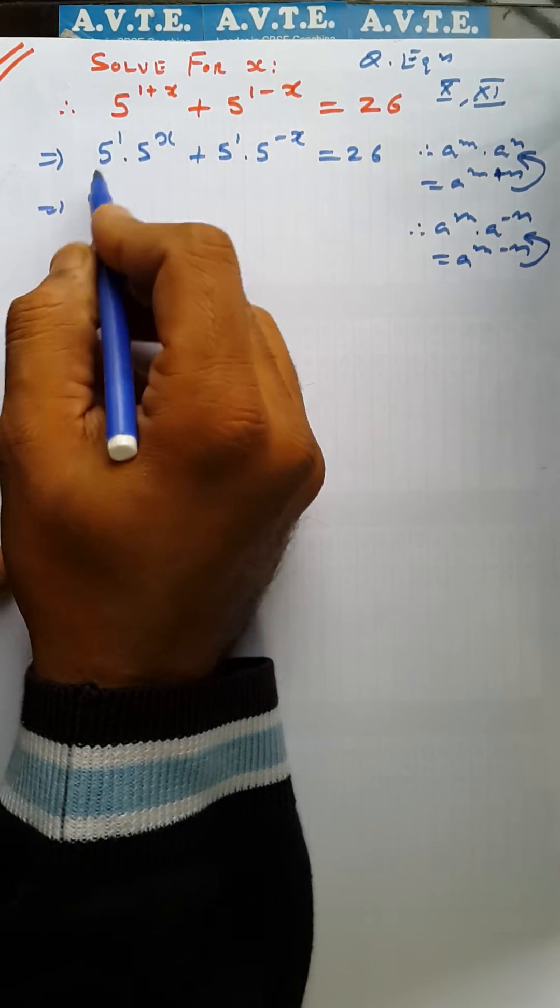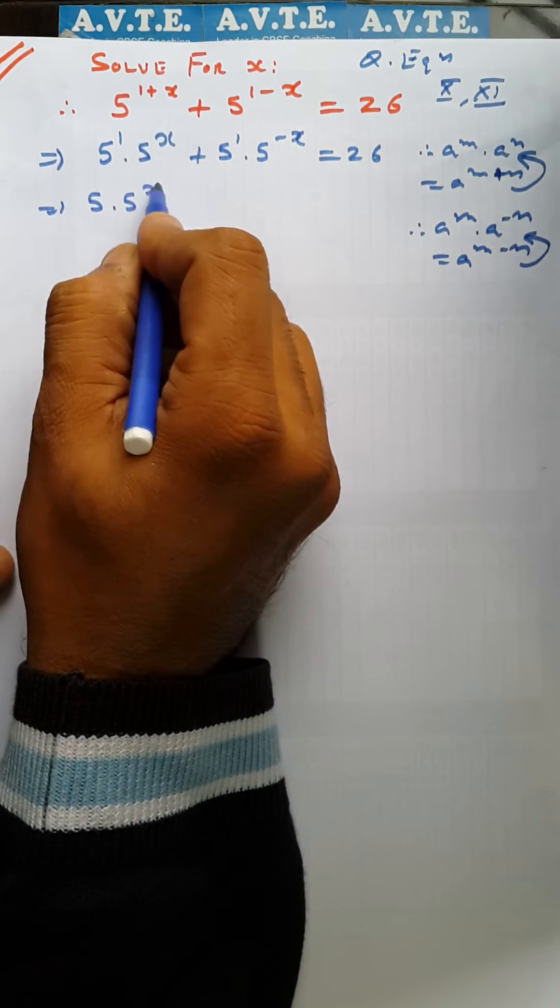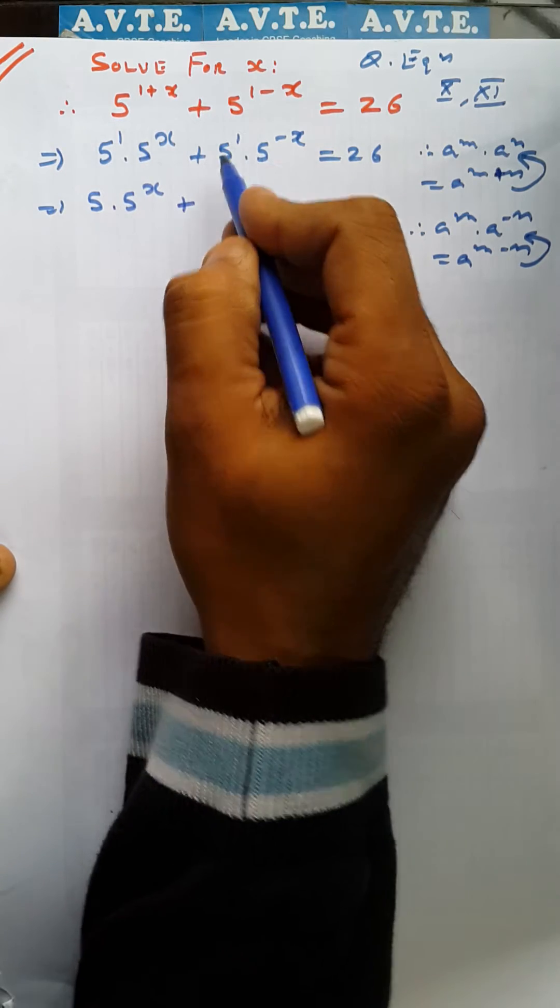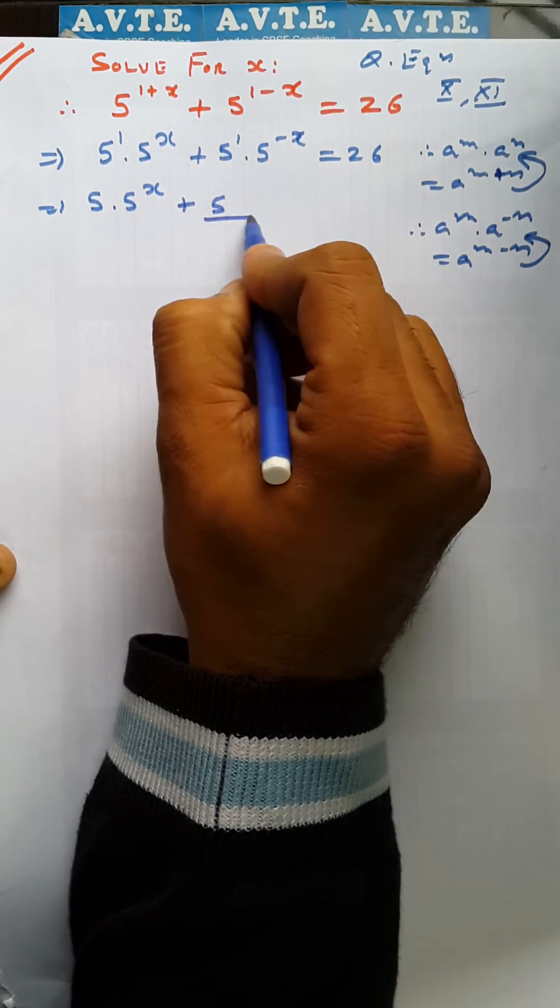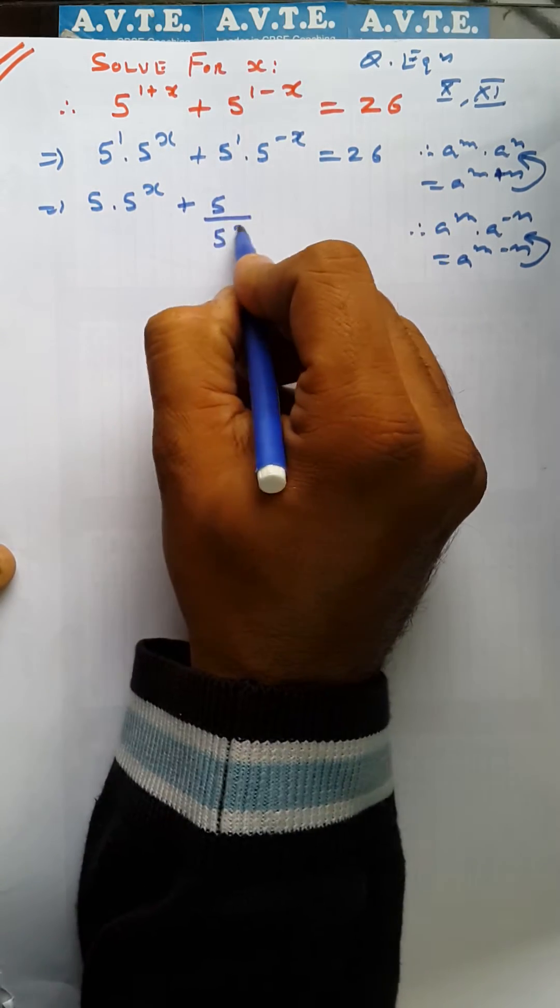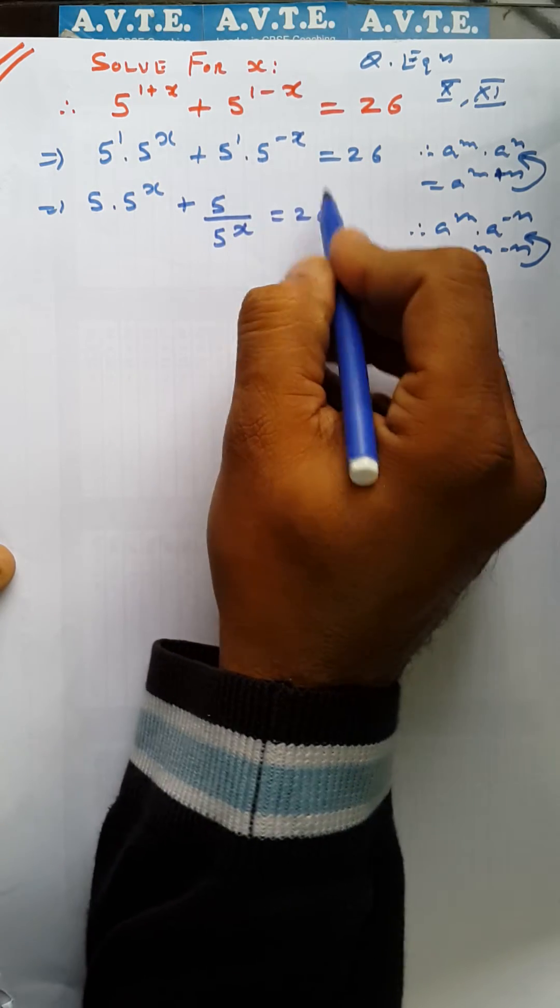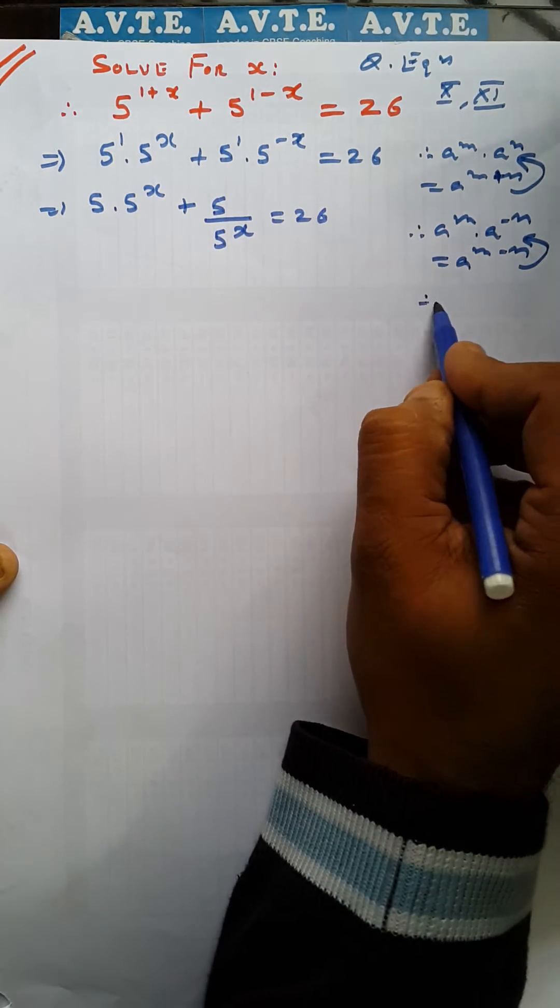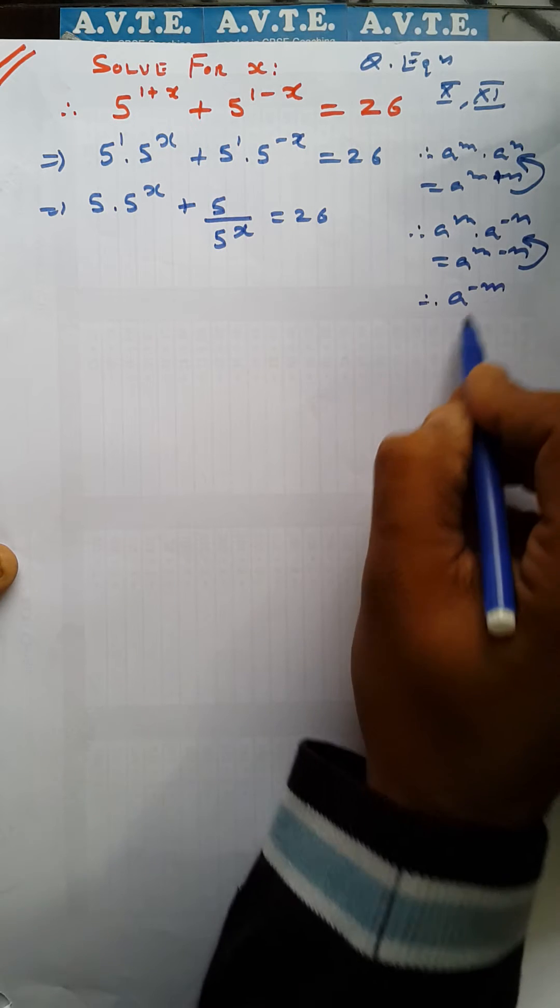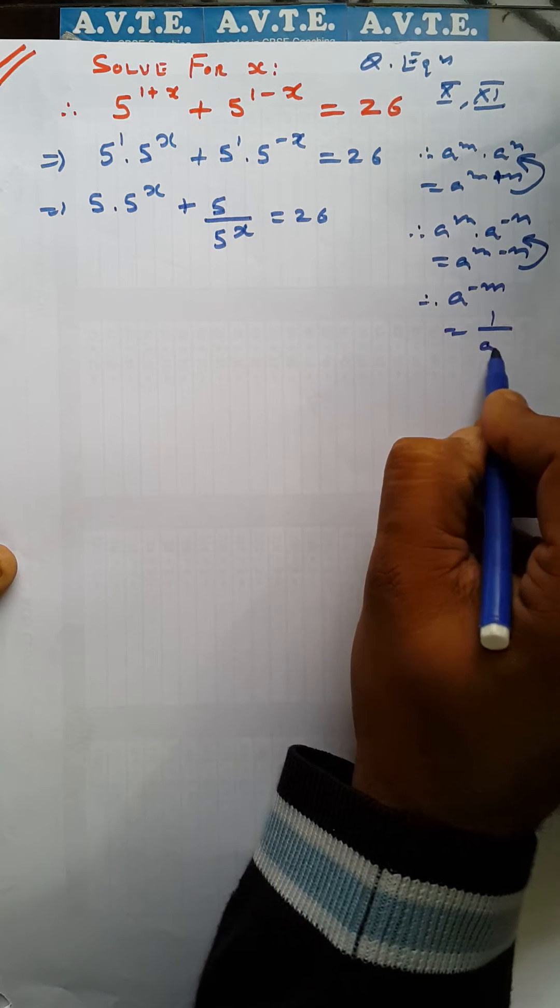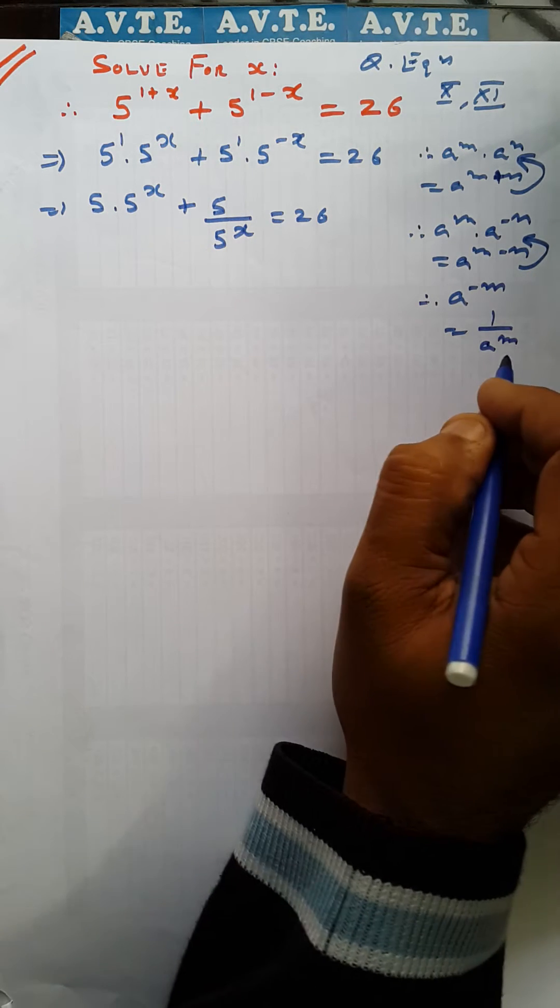Now 5 raised to the power 1 is 5 times 5 raised to the power x plus 5 upon 5 raised to the power x is equal to 26. a raised to the power minus n is 1 upon a raised to the power m. Your power should be in positive.